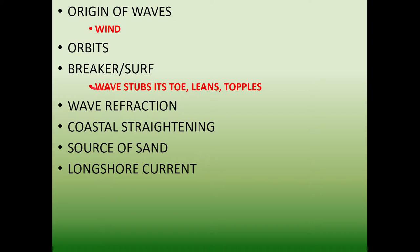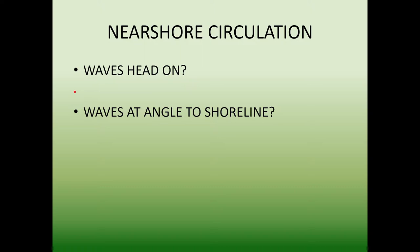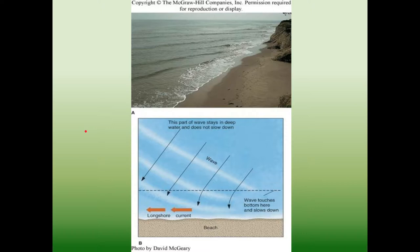Waves move in these parallel lines, and then they'll get close to the coast and they'll start to bend and refract. This bending and refracting can lead to coastal straightening. Do waves hit head-on, or do they hit at an angle to the shoreline? If you go to the beach and look at any shoreline, usually you'll see that waves are coming in at a little bit of an angle. You can see these waves make an angle with the beach and as they come in, they refract.